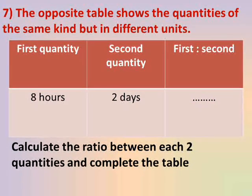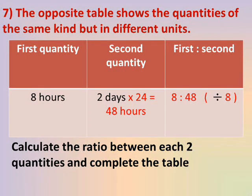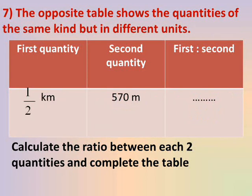Second entry: 8 hours to 2 days. Convert from days to hours — the larger to smaller. 2 days × 24 = 48 hours. The ratio is 8 to 48. Both divisible by 8: 8 ÷ 8 = 1 and 48 ÷ 8 = 6. The ratio in simplest form is 1 to 6.